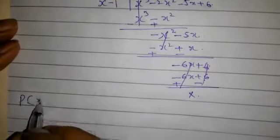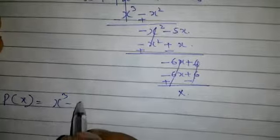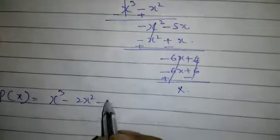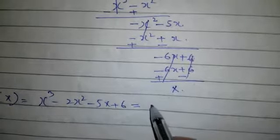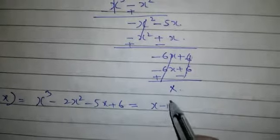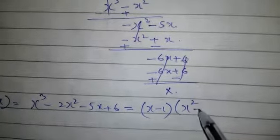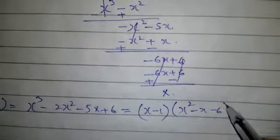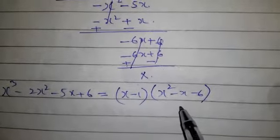So we get p(x) = x³ - 2x² - 5x + 6 = (x - 1)(x² - x - 6). Now this part is further factorizable.